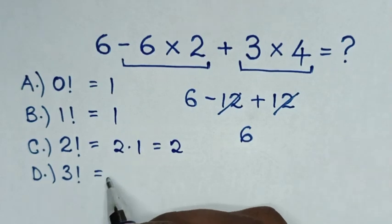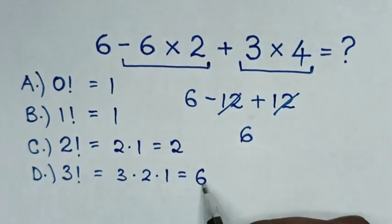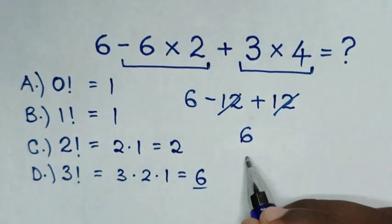3 factorial is equal to 3 times 2 times 1, which is equal to 6, as are the same answers.